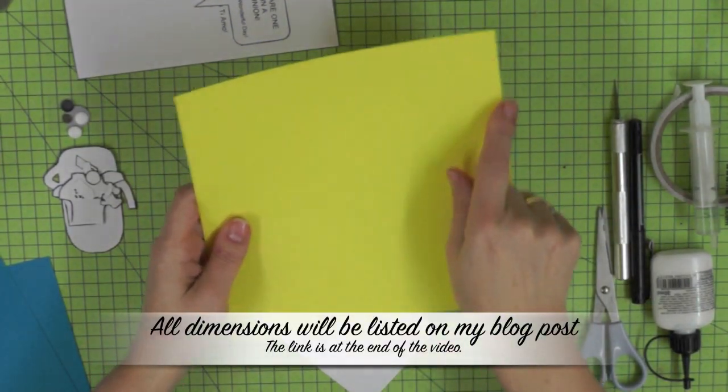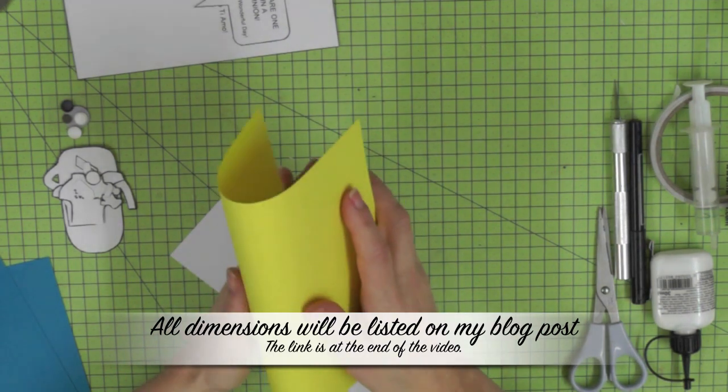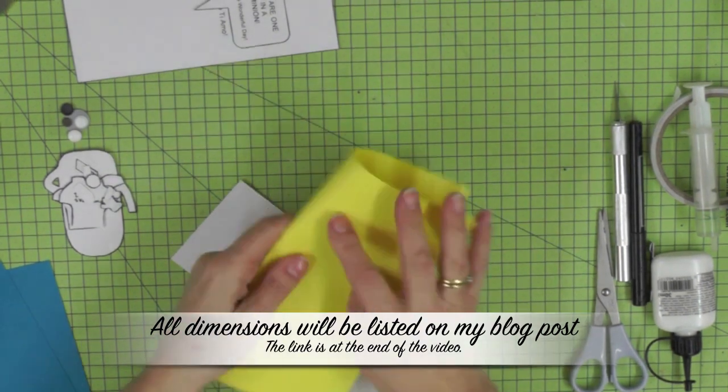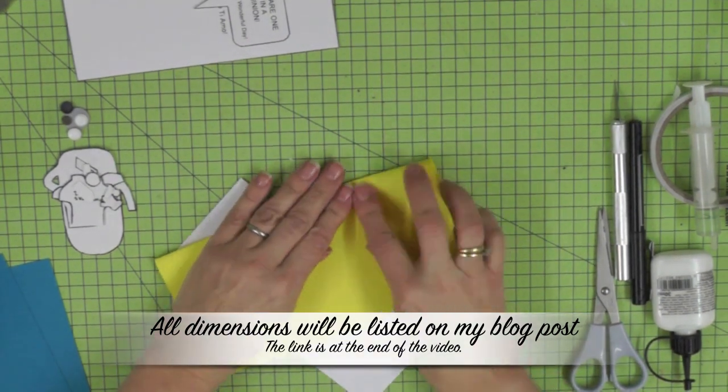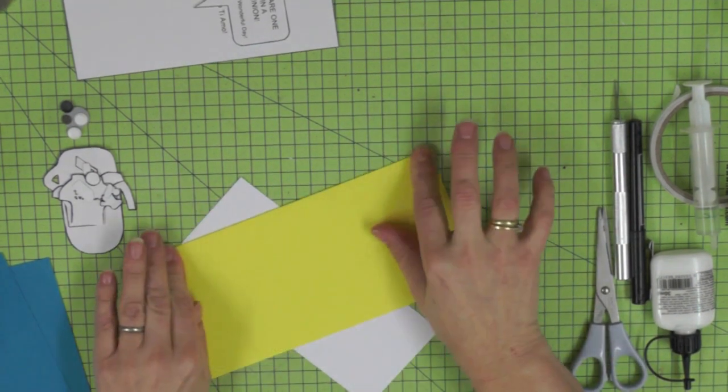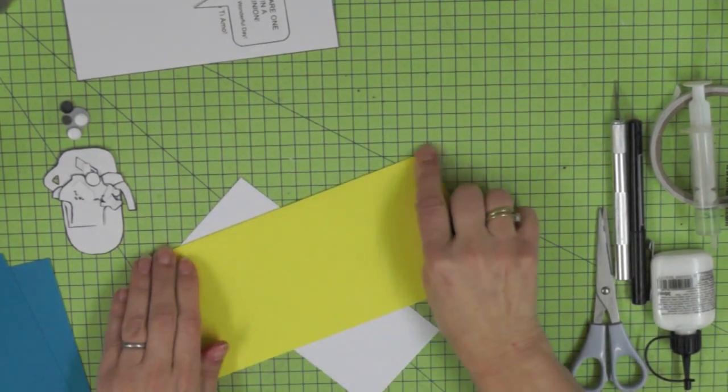So we're starting with our card base that measures 8 inches by 8 inches and then I've scored it at 4 inches. Then if you fold that in half that makes your card base which is the standard size DL.